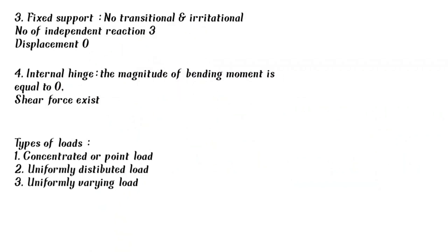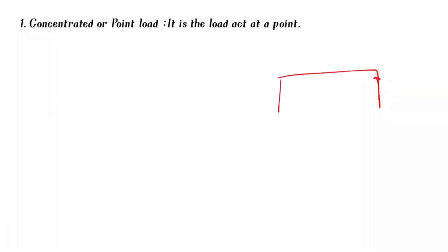Next, types of loads. There are different types of loads: concentrated or point load, uniformly distributed load, and uniformly varying load. A concentrated or point load is a load that acts at a point — it has a small area of effect.